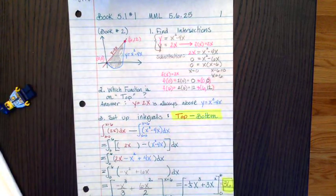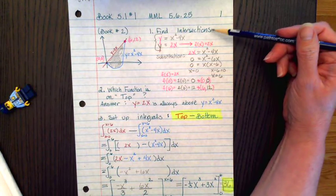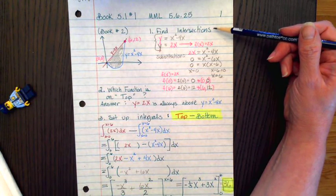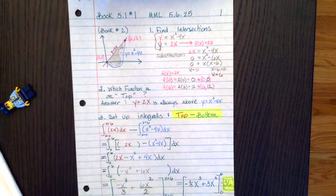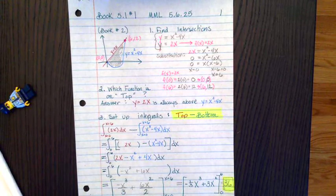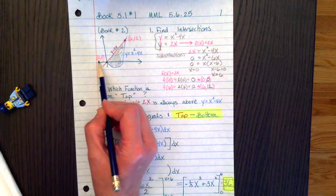To do this, the first step is going to be to find the intersection points, these two pink points. Now, in your book, the two pink points are actually in the graph that we've got: 0,0 and 6,12.